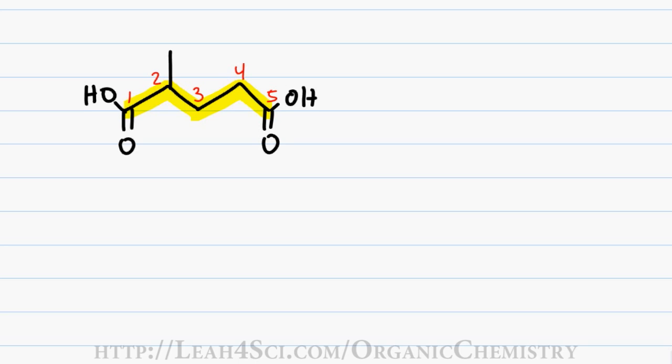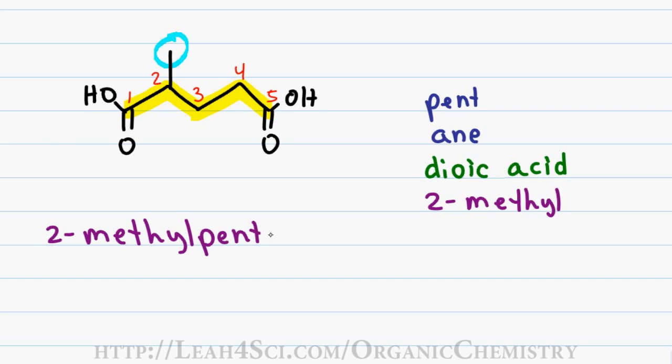Five carbons gives me a first name of pent. Only single bonds in the chain gives me a last name of ane. Since the carboxylic acids are assumed to be first and last, I don't have to include the number. I simply put the suffix dioic acid. A one carbon substituent on two gives me the prefix of 2-methyl for a final name of 2-methylpentanedioic acid. Notice that I didn't drop the E in ane given that di starts with a consonant.